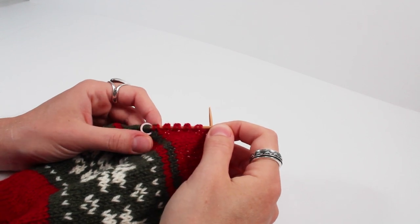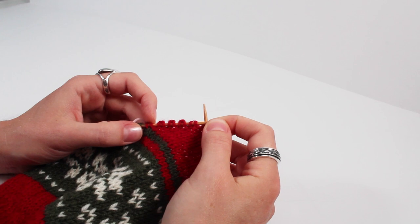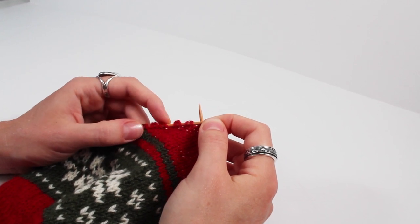Here you can see completed short row stitches. When you make a German short row stitch you will end up with what looks like a double stitch.